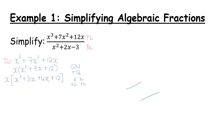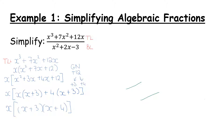I'm going to use square brackets to ensure we don't get confused with where brackets start and end. I've rewritten my 7x as plus 3x plus 4x. Now I'm going to do my grouping. In the first two terms, x squared plus 3x, an x is common. In the second set, a 4 is common. My check: are my brackets the same? Yes, they're both x plus 3. So I'll pull those out, leaving me with x plus 4. Dropping the square brackets, that is the top line fully factorized.